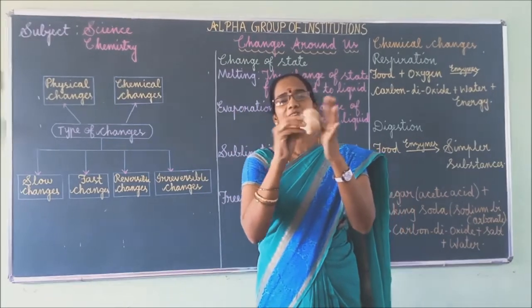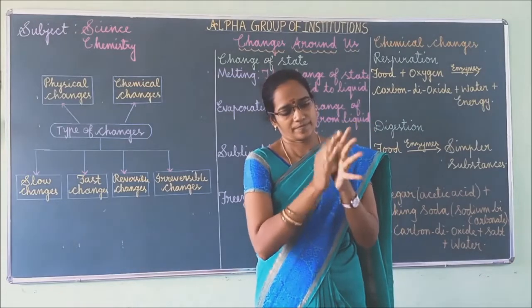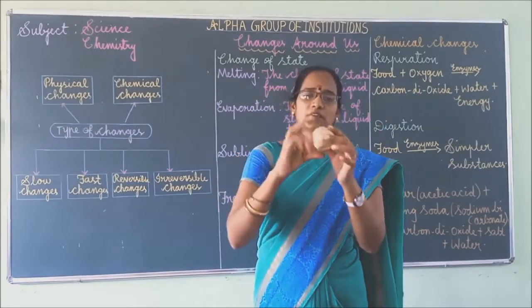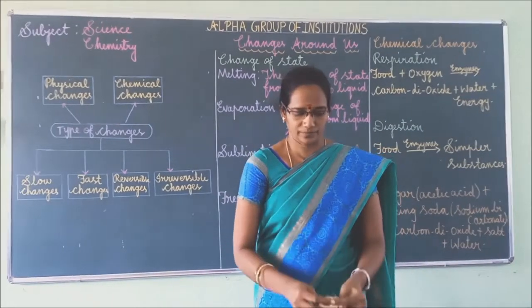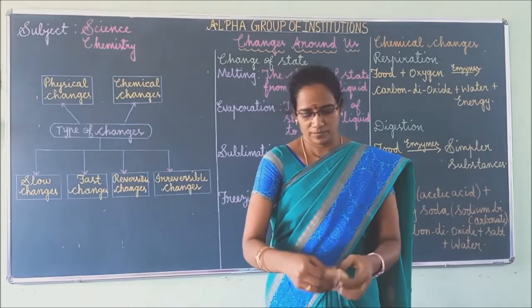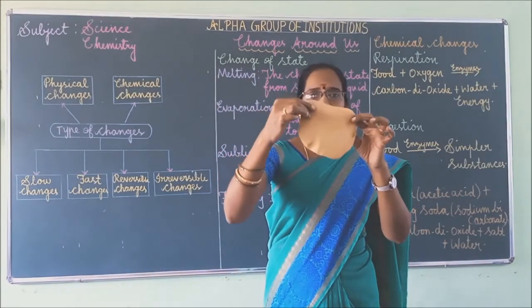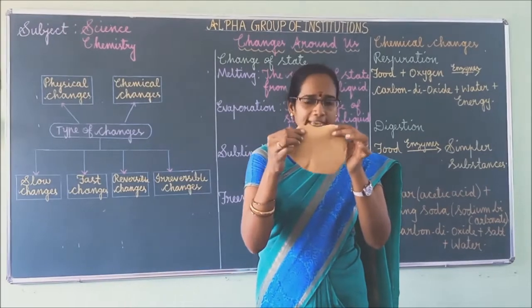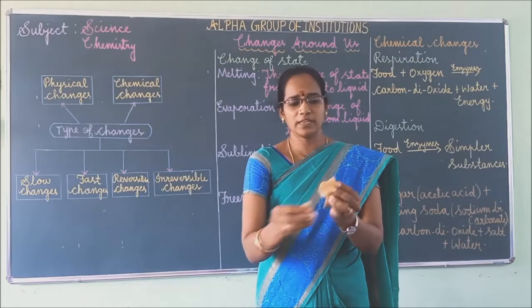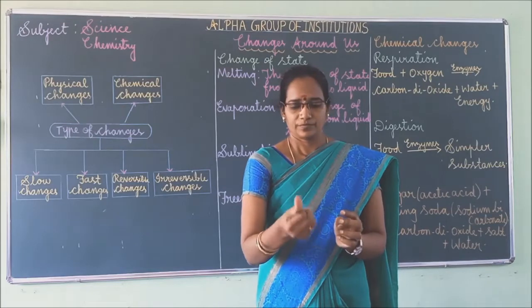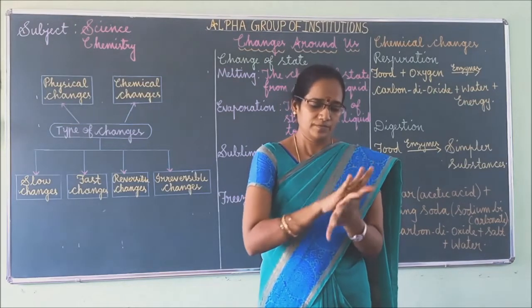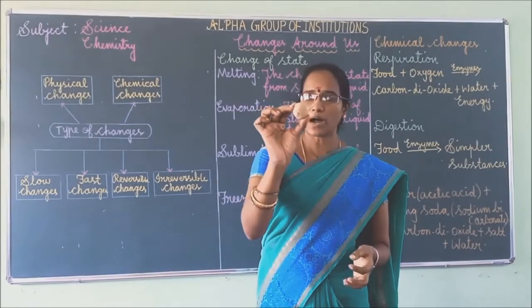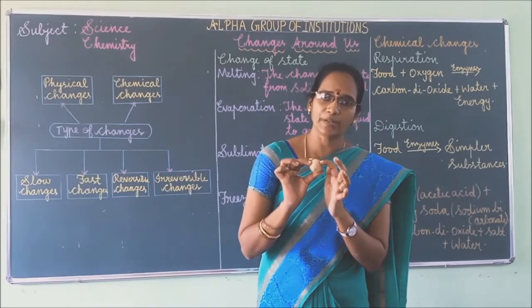Second activity for reversible change: take some dough and make a ball from it. Now roll it to make a chapati. Then pick up the chapati and make it into a ball again. You observe that you can get a ball again. So this is also an example of reversible change.